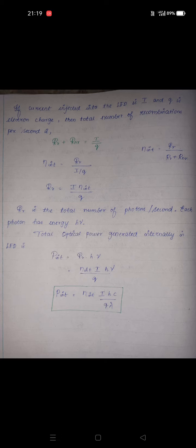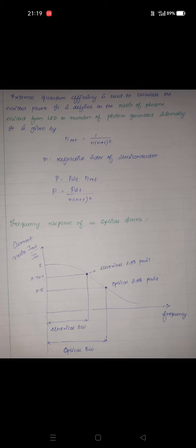External quantum efficiency accounts for the fact that not all internally generated light escapes the LED. It is defined as the ratio of photons emitted from the LED to the number of photons generated internally — that is, how many photons we are able to perceive externally compared to how many are generated inside.